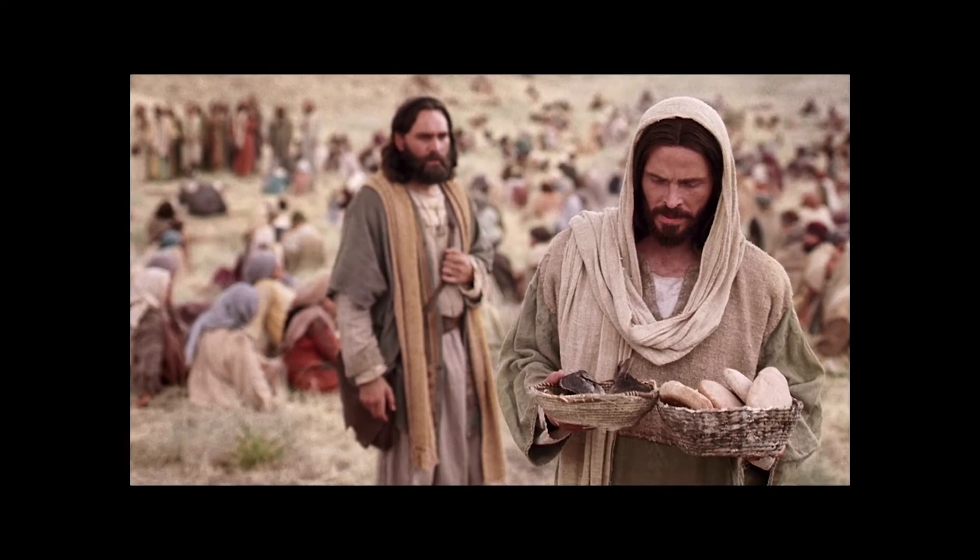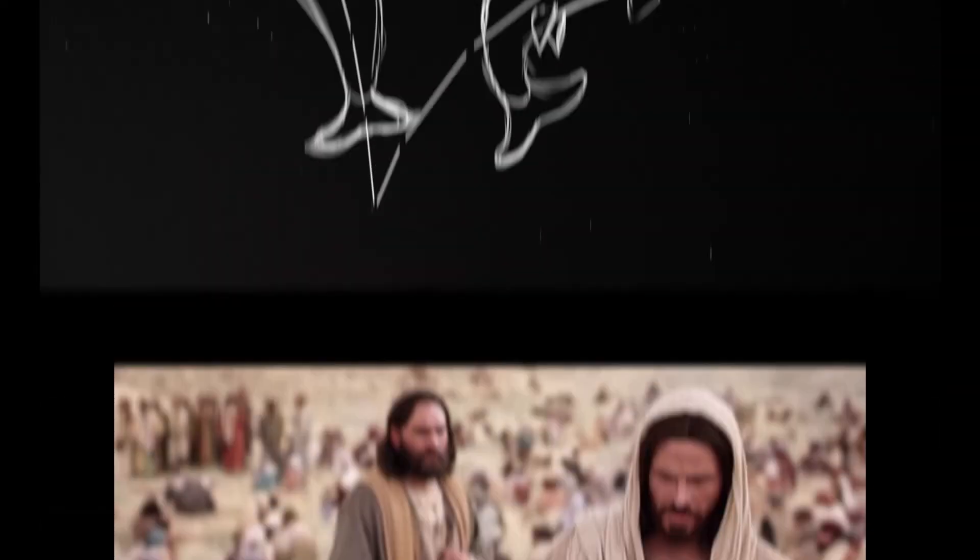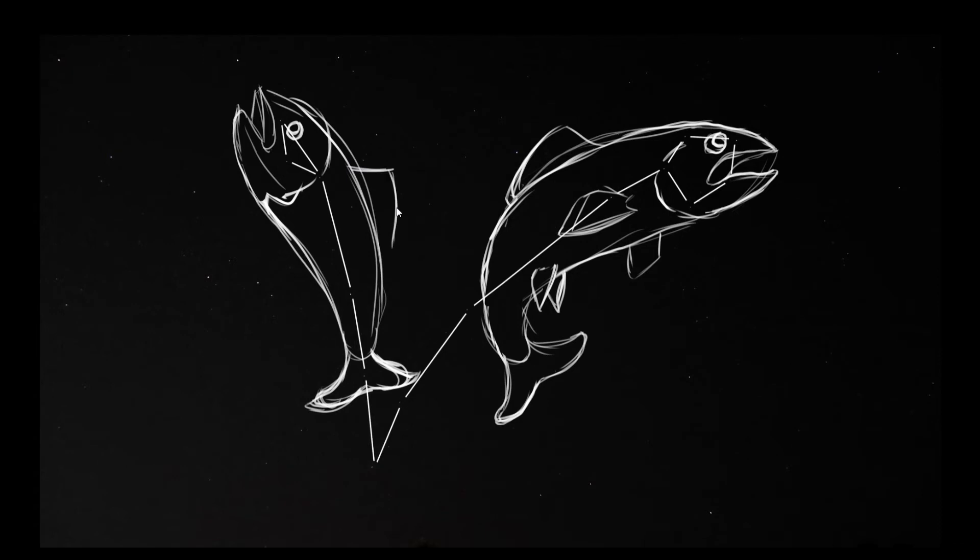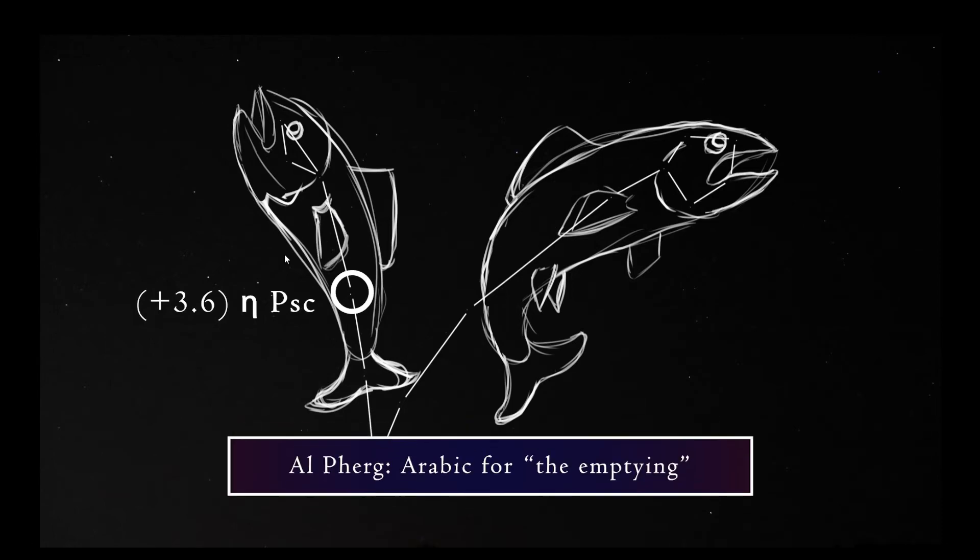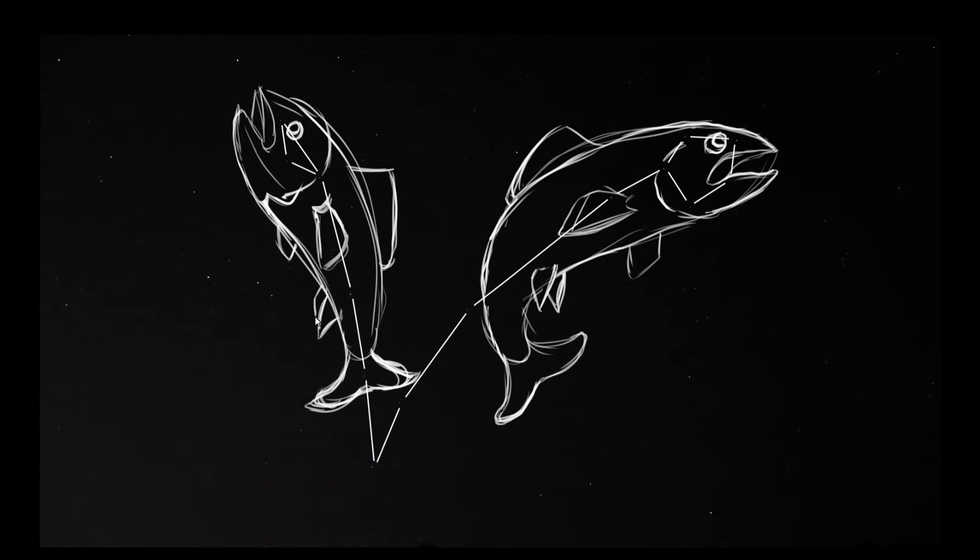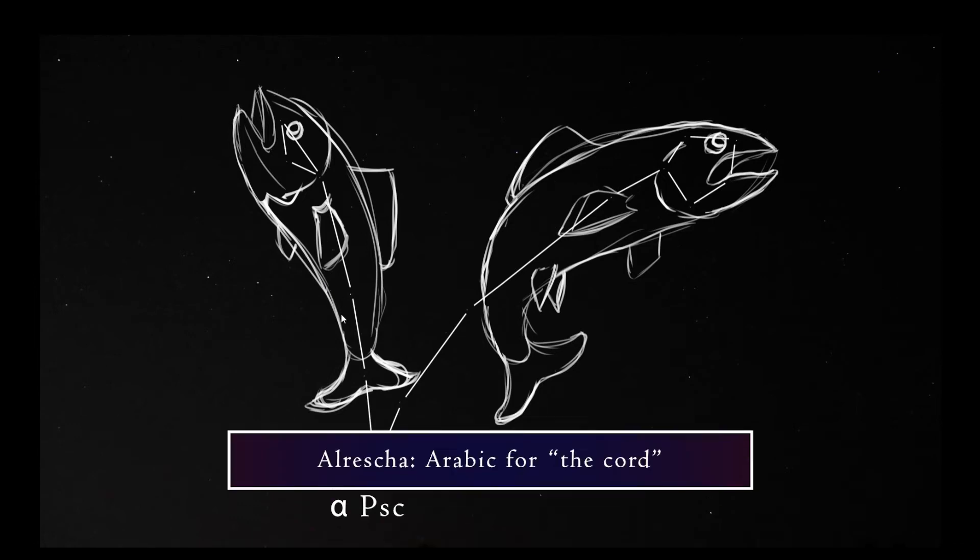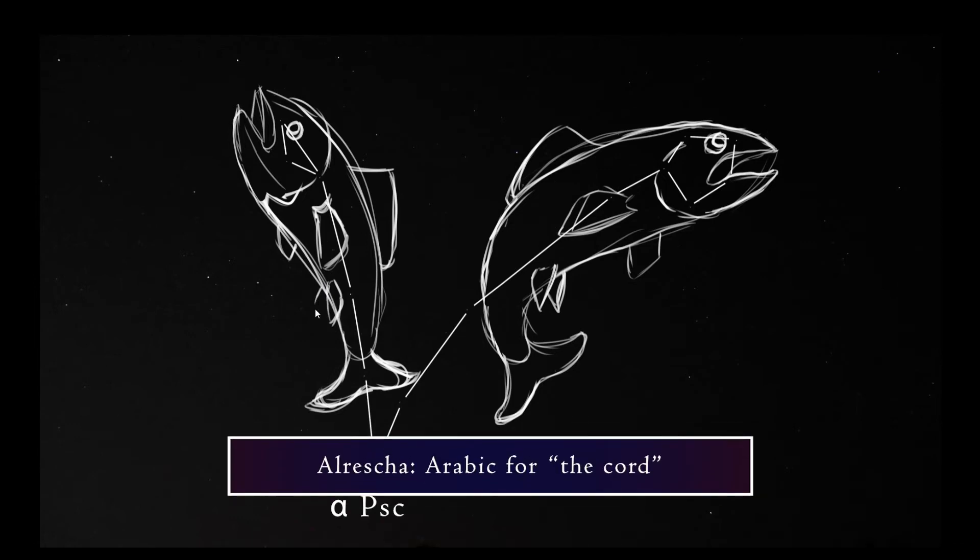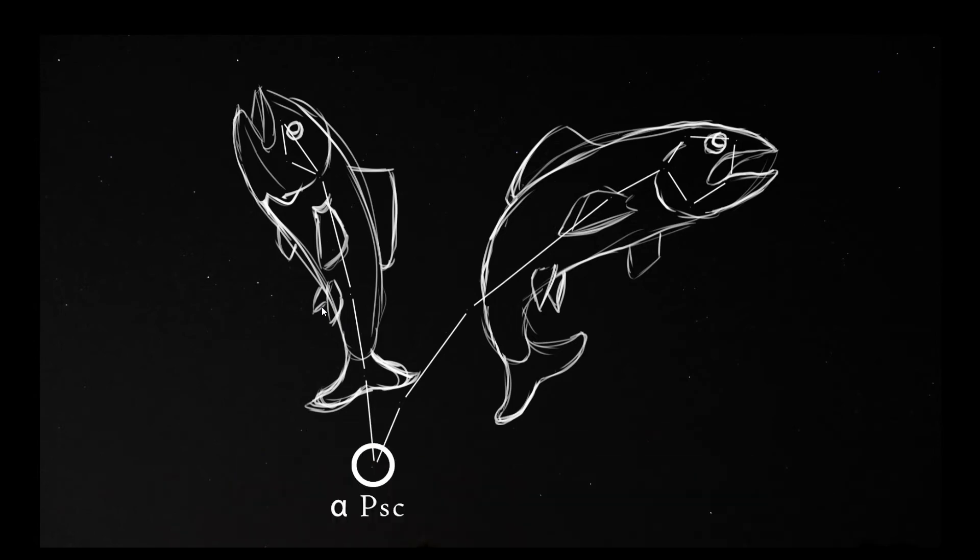The brightest star in Pisces is Eta Piscium, coming in at an apparent magnitude of 3.6 and about 349 light years away. It is a binary star and its traditional name is Alferg, meaning the emptying. Alpha Piscium is the star connecting the two fish. Its traditional name is Alrescha, which is derived from the Arabic word for the cord. It is 309 light years away and also has an apparent magnitude of about 3.6.